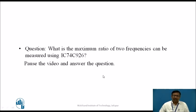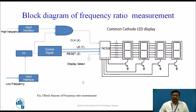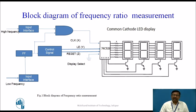Question: What is the maximum ratio of two frequencies that can be measured using IC74C926? Pause the video and answer. As we have seen, the maximum that can be displayed is 9999. But since we are counting from 0, the maximum ratio that can be counted is 10,000 — from 0 to 9999. So the answer is: the maximum ratio that can be measured using IC74C926 is 10,000.